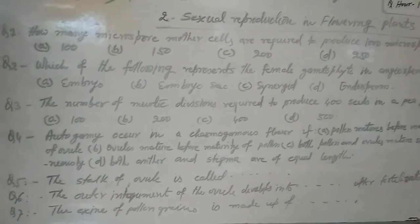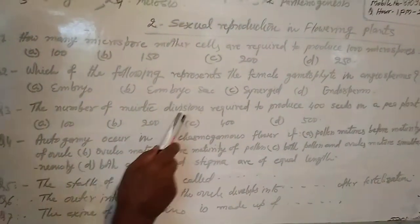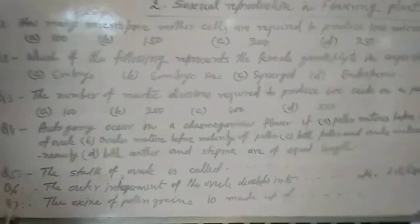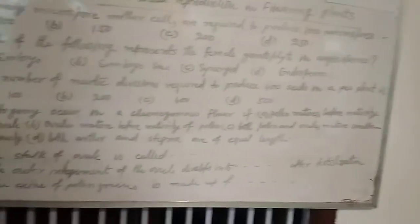Question number 3. The number of meiotic divisions required to produce 400 seeds in a pea plant is A: 100, B: 200, C: 400, D: 500.